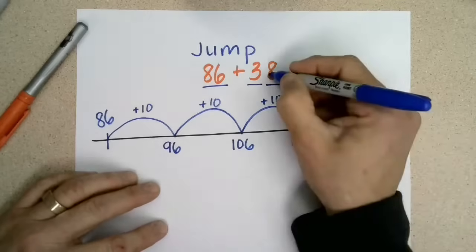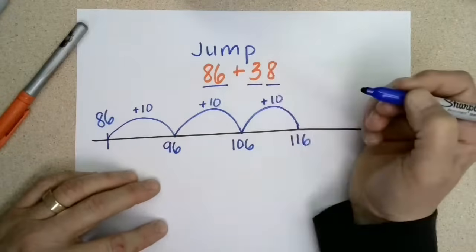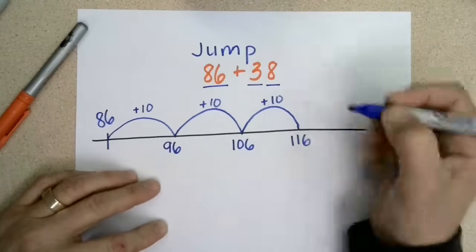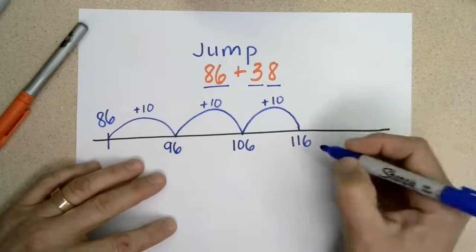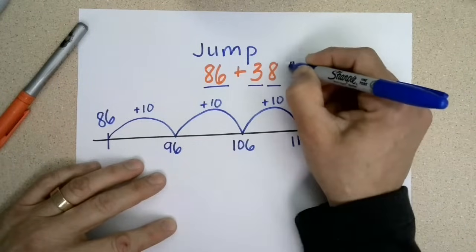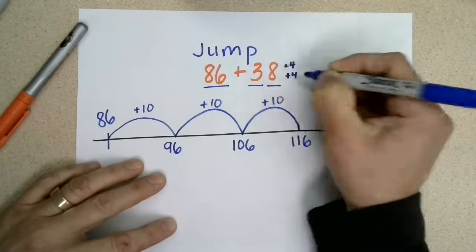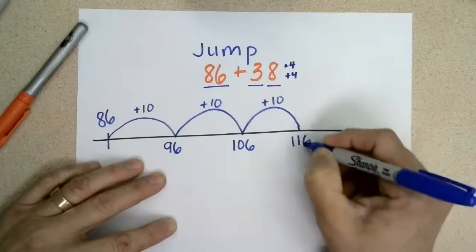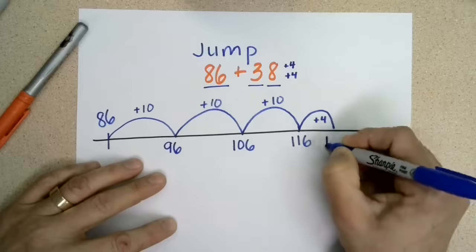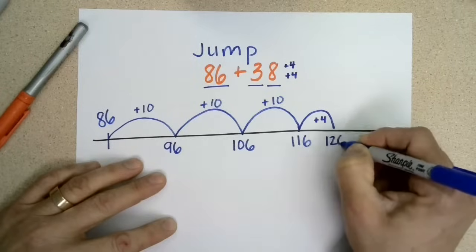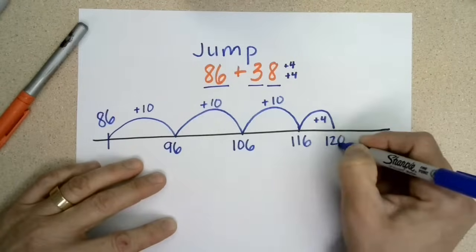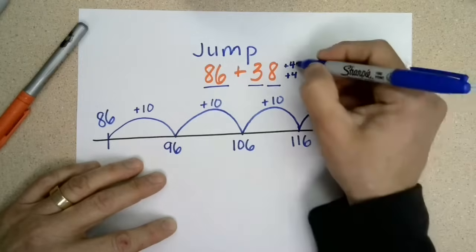Now that I'm at 116, I'm going to add my eight ones. I can add eight and six together, or I can break eight up to make it a little easier. I'm going to think of eight as four and four, because 116 plus four is 120 — six plus four is 10, so that brings it to the next ten, which is 120.